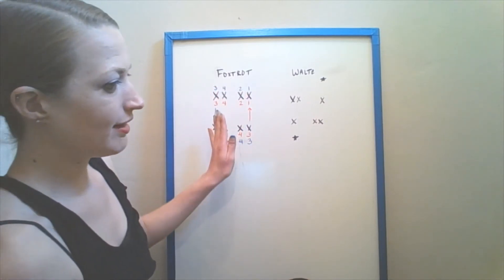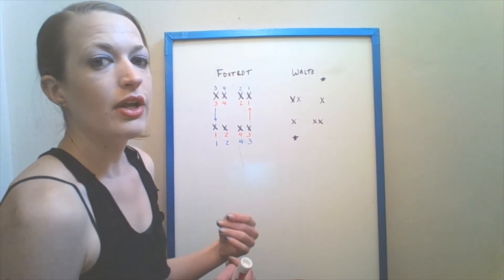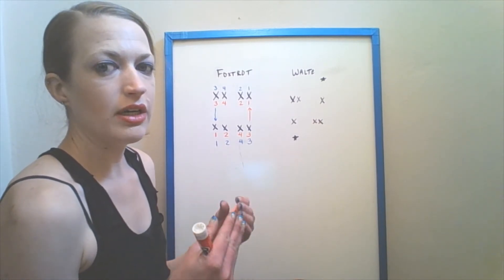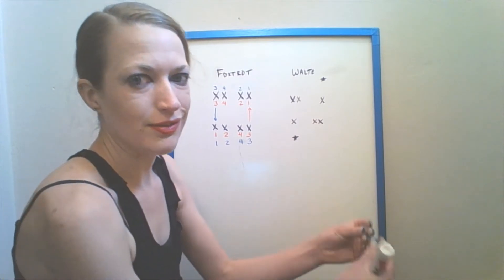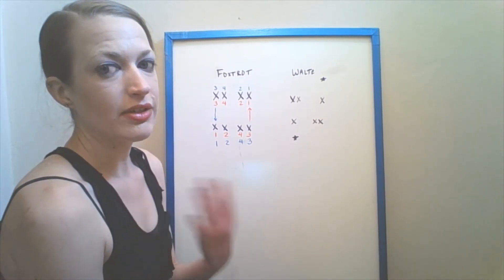Now on this chart, it looks like we're doing a box step. But when you're with your partner, you're moving in a unit across the floor. Like I said, the follower is moving backwards, the leader is moving forwards.